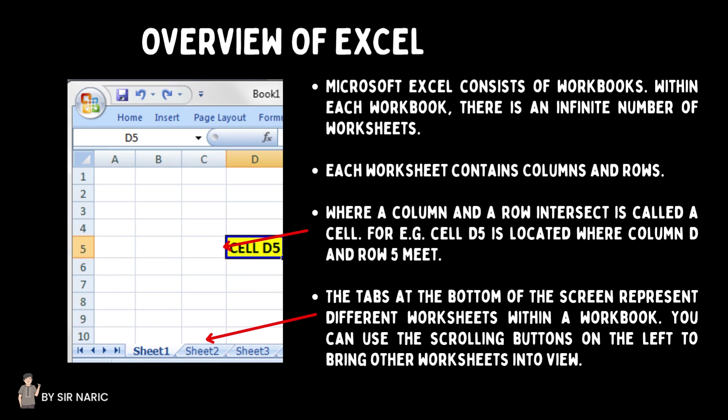Here's an overview of Microsoft Excel. Microsoft Excel consists of workbooks. Within each workbook there is an infinite number of worksheets. Each worksheet contains columns and rows, and where a column and a row intersect is called a cell. For example, cell D5 is located where column D and row 5 meet. The tabs at the bottom of the screen represent different worksheets within a workbook, and you can use the scrolling buttons on the left to bring other worksheets into view.